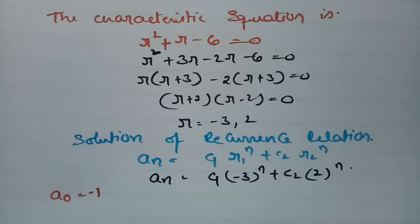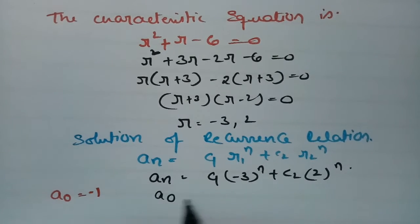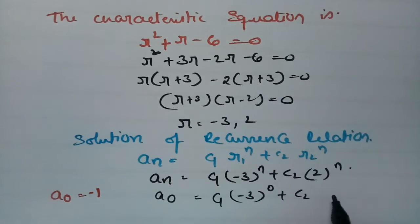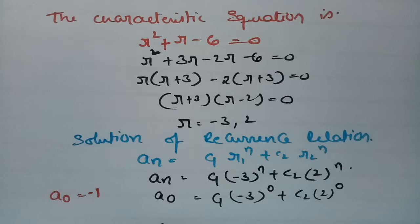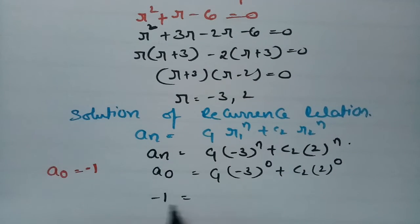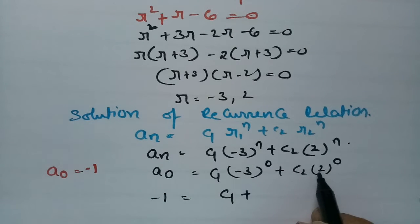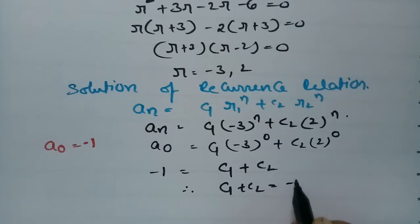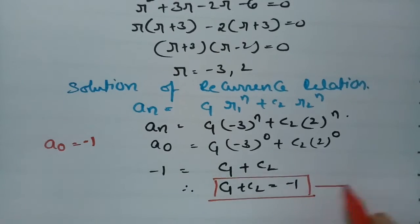For A0 = -1, we put n = 0: A0 = C1·(-3)^0 + C2·2^0. Since anything to the power 0 is 1, this gives C1 + C2 = -1. This is equation 1.